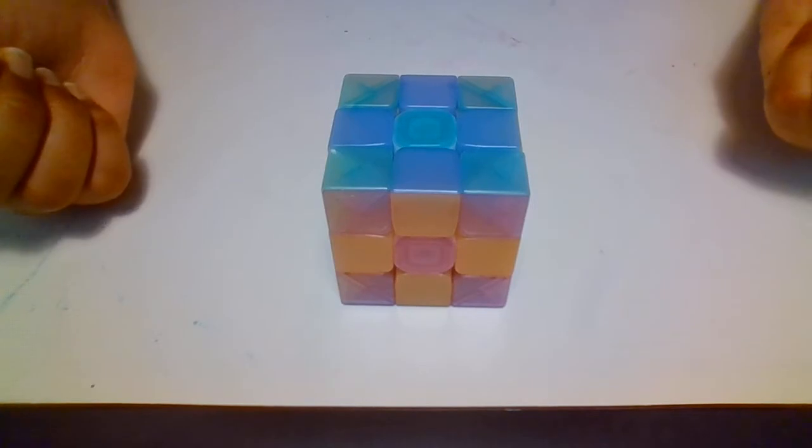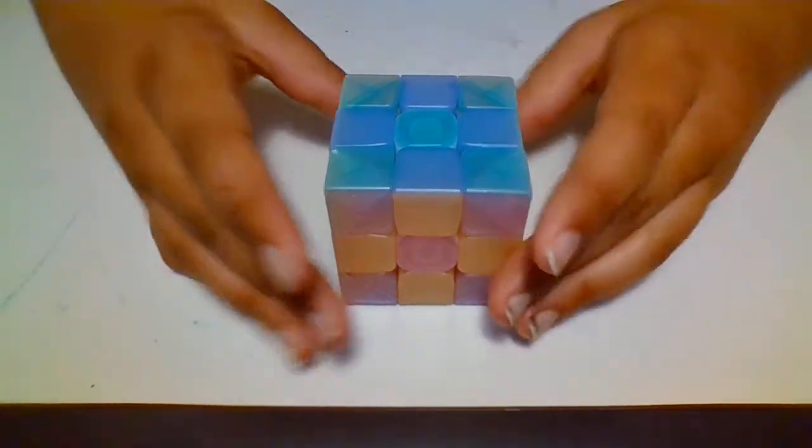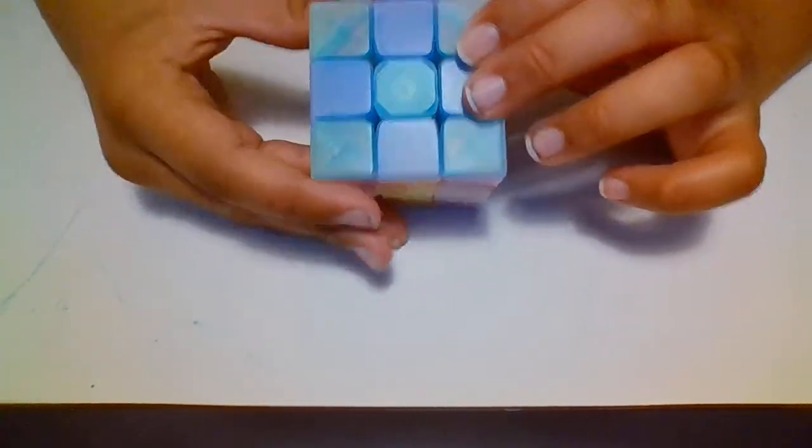So then you have your checkers pattern, but to undo it you will just do the exact same thing again.